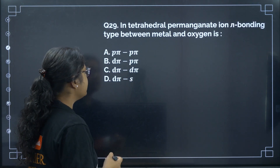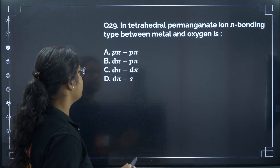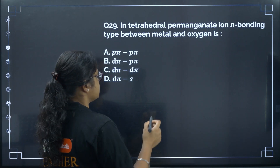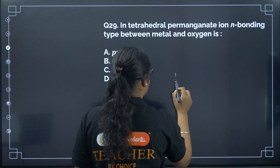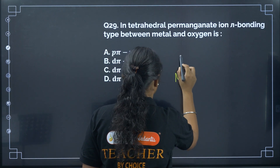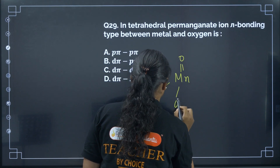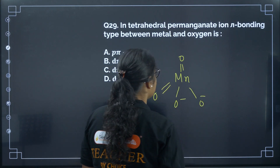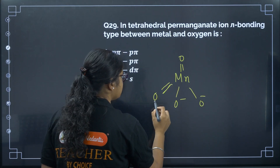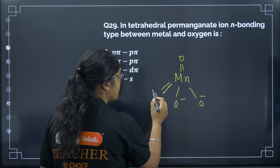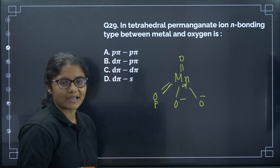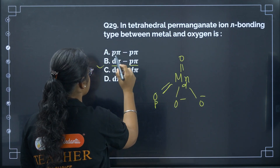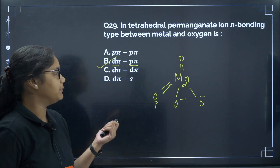Question 29: In the tetrahedral permanganate ion MnO₄⁻, what type of pi bonding exists between the metal and oxygen? The bonding is between the p orbital of oxygen and the d orbital of manganese, making it a dπ–pπ bond. The correct answer is option B.